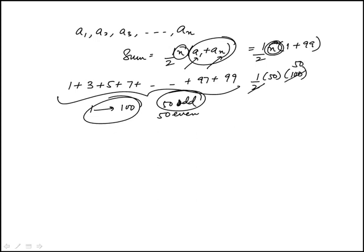So that's 50 times 50, which is 2,500. And that's the answer, which is choice D.